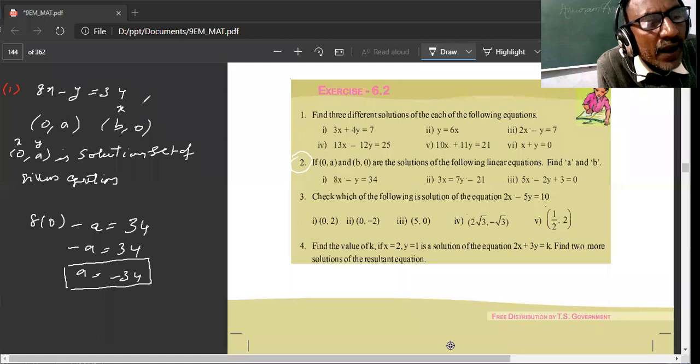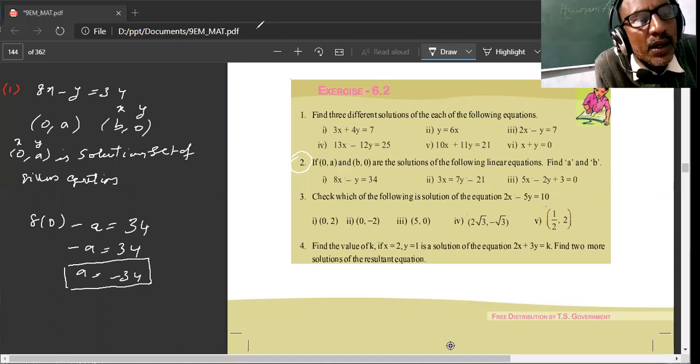b, y value 0. This solution set. And then, substitute 8b minus y equals to minus 34.